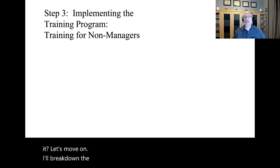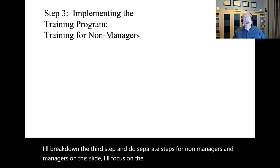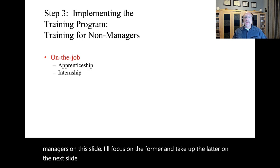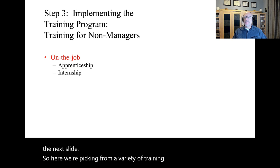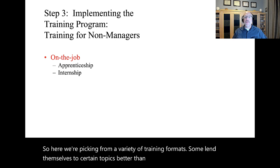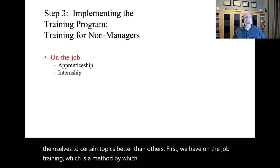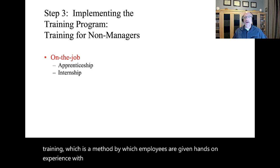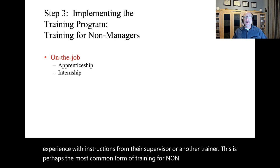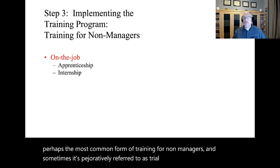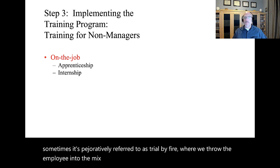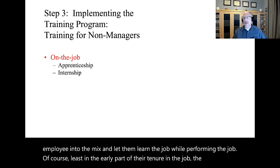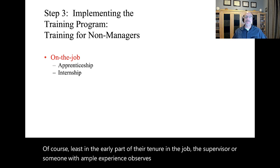We'll break down the third step into separate steps for non-managers and managers. Here we're picking from a variety of training formats. Some lend themselves to certain topics better than others. First, we have on-the-job training, which is a method by which employees are given hands-on experience with instructions from their supervisor or another trainer. This is perhaps the most common form of training for non-managers, and sometimes it's pejoratively referred to as trial by fire, where we throw the employee into the mix and let them learn the job while performing the job. At least in the early part of their tenure, the supervisor or someone with ample experience observes them closely so they don't mess up too badly.